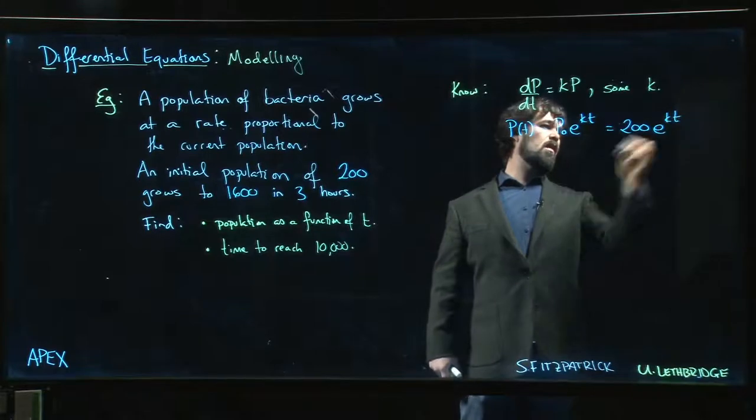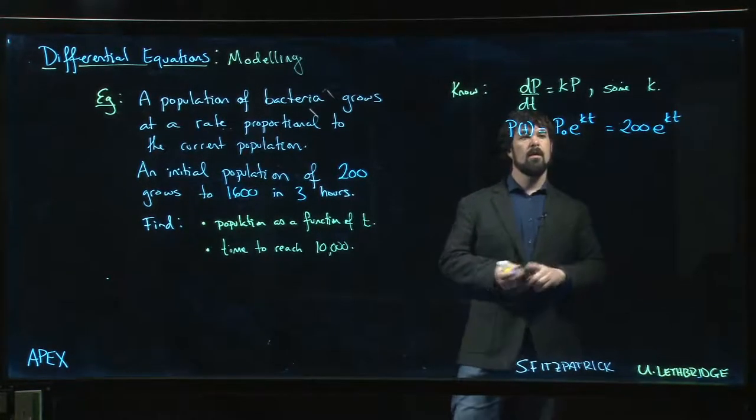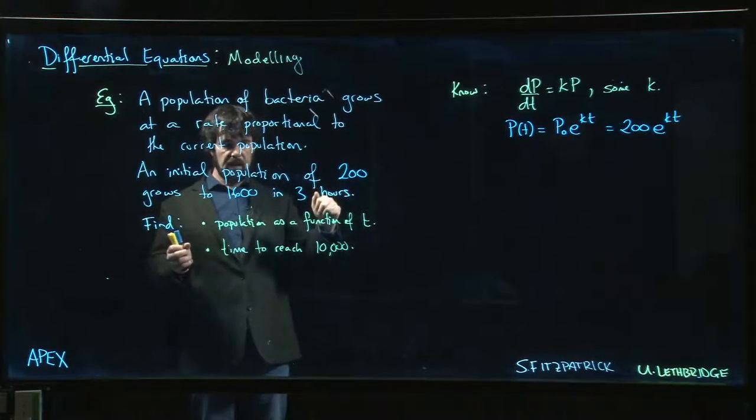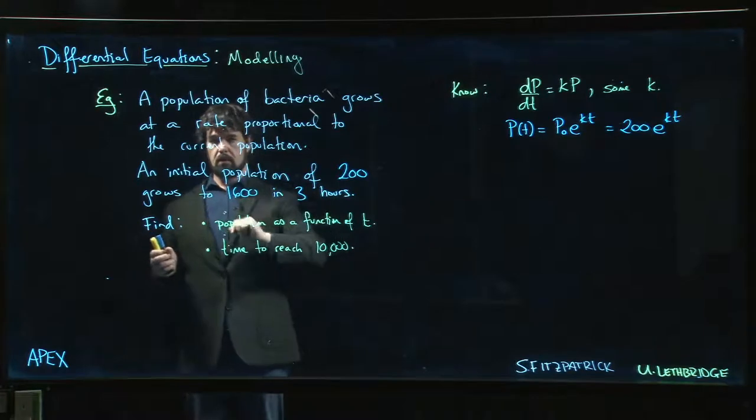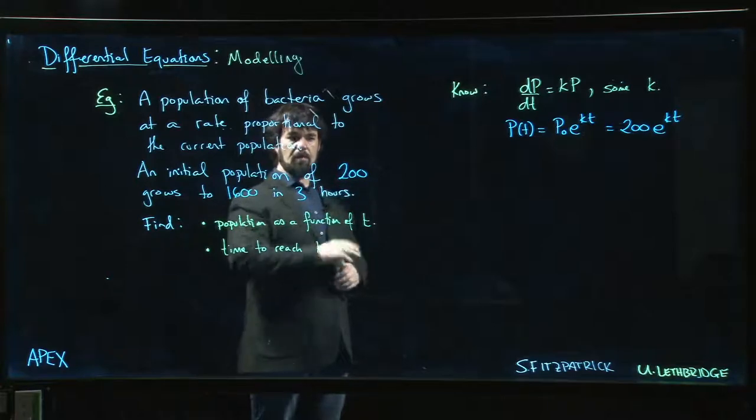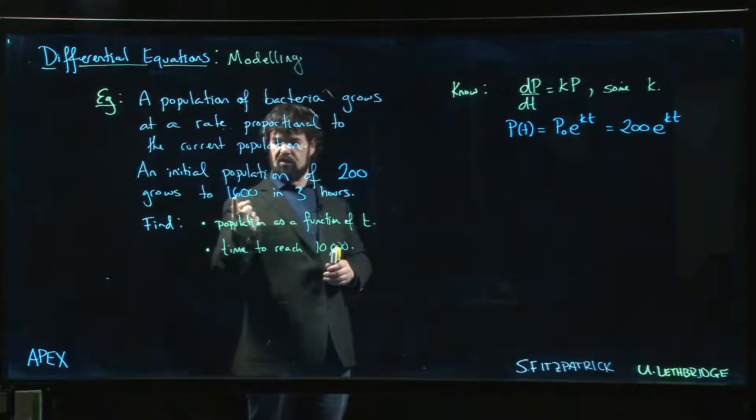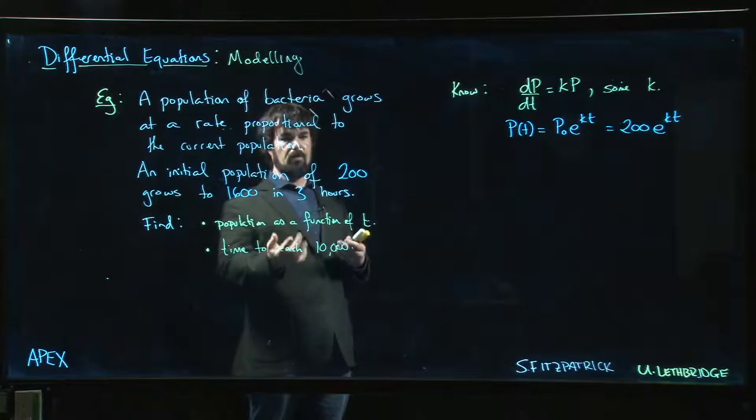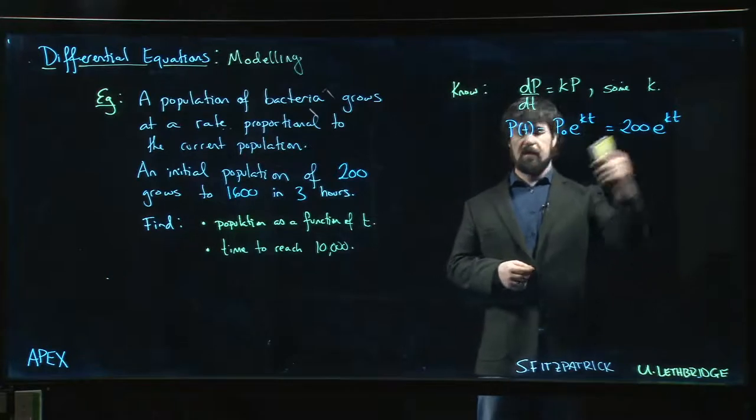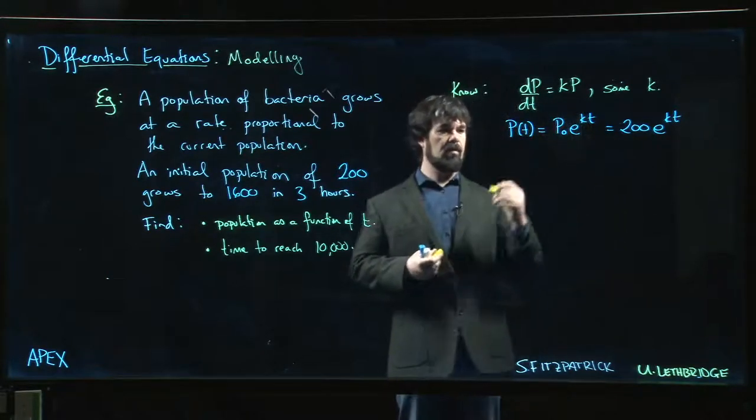All right, so now the next job we have is figure out what that value of k is, and we can do it from the information we're given. They're telling us that this initial population of 200 grows to a population of 1600 in three hours. So in three hours it quadruples. That's going to tell us the value of k.